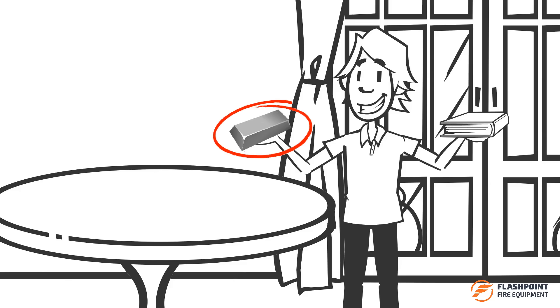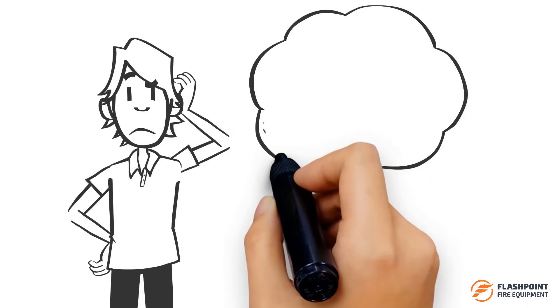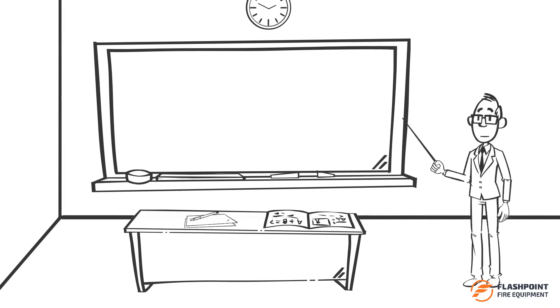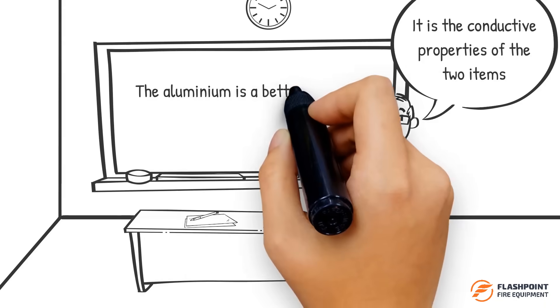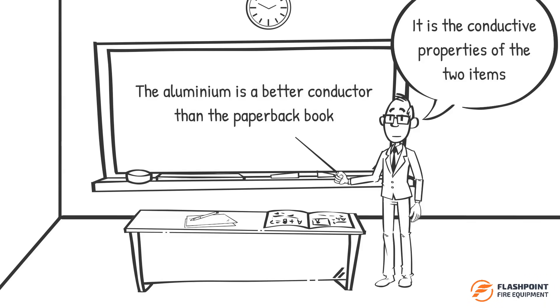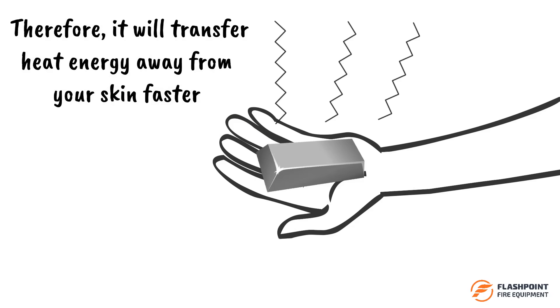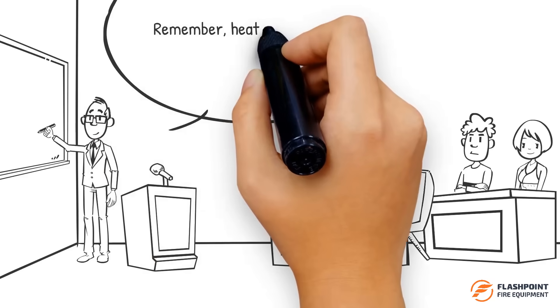Initially, you would most likely believe that the aluminum block is cooler than the paperback book, as it feels colder to touch. However, both of these materials are the same temperature, as verified by the thermometer. Then what is causing the aluminum to feel cooler than the paperback book? It is the conductive properties of the two items. The aluminum is a better conductor than the paperback book, therefore it will transfer heat energy away from your skin faster.